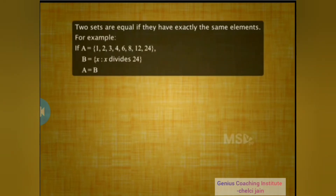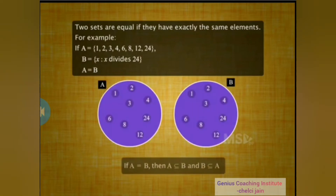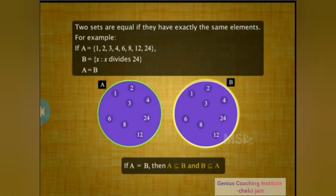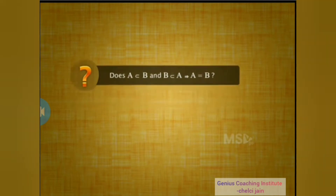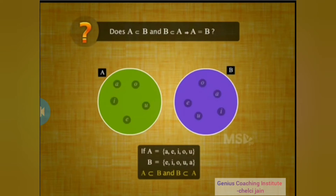Recall that two sets are equal if they have the same elements. For example, sets A and B shown here are equal sets. Notice that every element of set A is also an element of B and every element of set B is also an element of A. In other words, in the case of equal sets A and B, set A is a subset of B and set B is a subset of A. Now, if A is a subset of B and B is also a subset of A, then A and B must be equal.